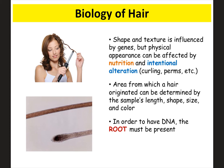By looking at a hair, you can determine where on the body it came from based on its length, shape, or size. But in order to have DNA, you must have the root present. Just finding a hair doesn't mean you'll automatically get a person's DNA — if the root is not there, the DNA will not be present.